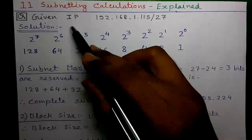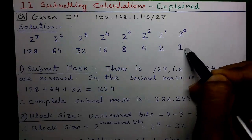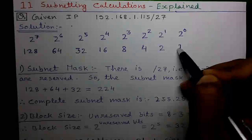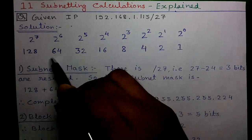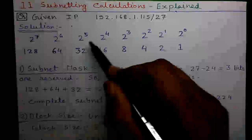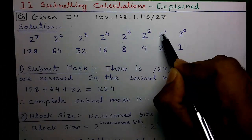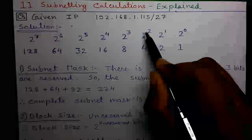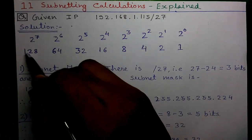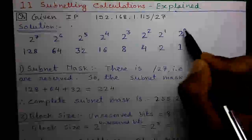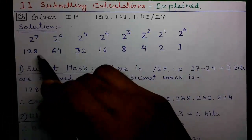Now coming to the solution. First you have to construct this weighted binary chart. It's very easy — starting from the right the first number is 1, and each number is a multiple of two: 1, 2, 4, 8, and so on up to 128. There is another logic: 2 to the power 0 is 1, 2 to the power 1 is 2, 2 to the power 2 is 4, and so on up to 2 to the power 7 which is 128. This weighted binary chart represents an octet because it has 8 bits: 1, 2, 3, 4, 5, 6, 7, and 8.